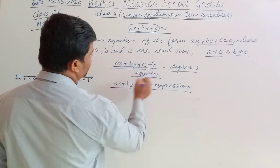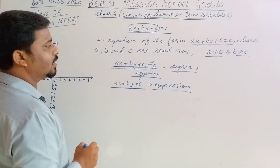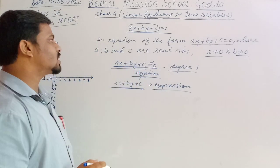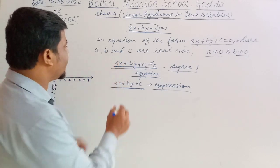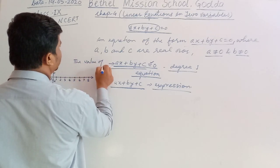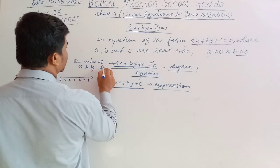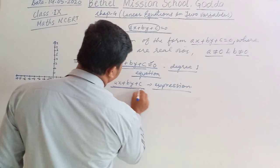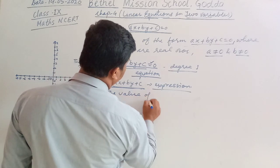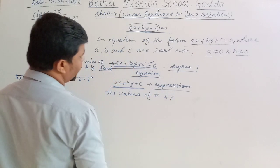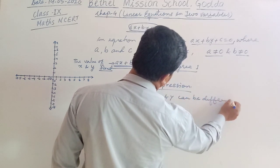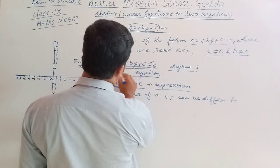So, what is the difference between Expression and Equation? In an Equation, the value of X and Y is fixed. And in an Expression, the value of X and Y can be different. That's why this is an Expression, and this is an Equation.